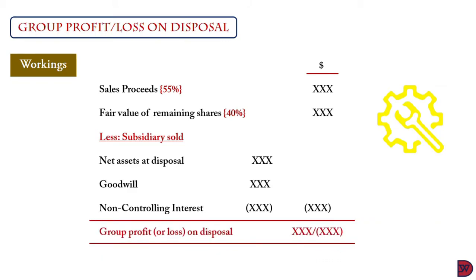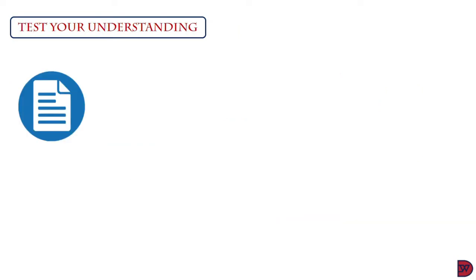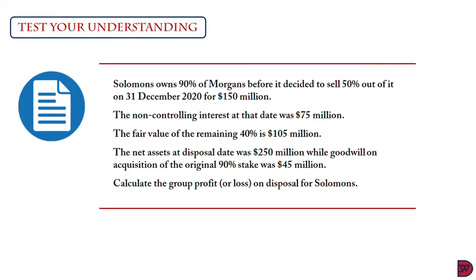Let's now test our understanding. Solomons owns 90% of Morgan's before it decided to sell 50% of it on the 1st of December 2020 for 150 million dollars. The non-controlling interest at that date was 75 million dollars. The fair value of the remaining 40% is 105 million dollars. The net assets at disposal date was 250 million dollars, while goodwill on acquisition of the original 90% stake was 45 million dollars. We are required to calculate the group profit or loss on disposal for Solomons.